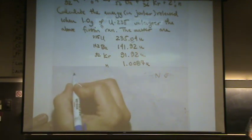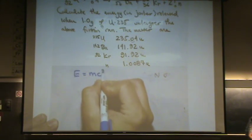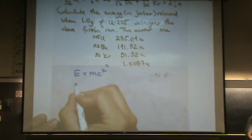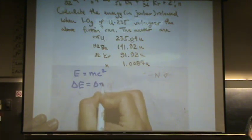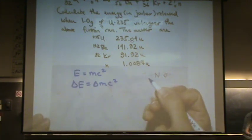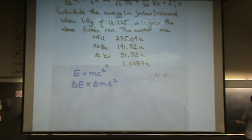So remember that we have energy equals mass times c squared. And I think it's helpful to think of it in these terms: change in energy is change in mass times c squared. So actually we want the change in mass and that will give us the change in energy, which is really what they're asking for.